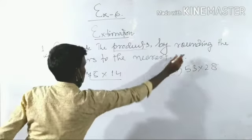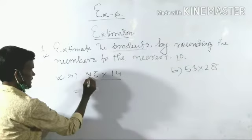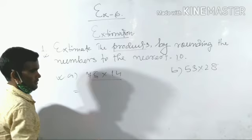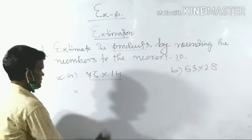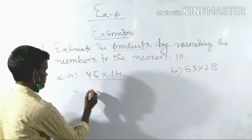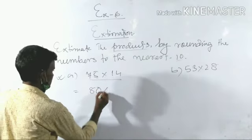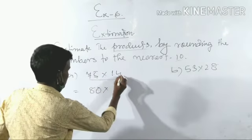Now look at 75. One ten, the next number is 5. Five is equal to 5, so it is nearest to 80, not 70.